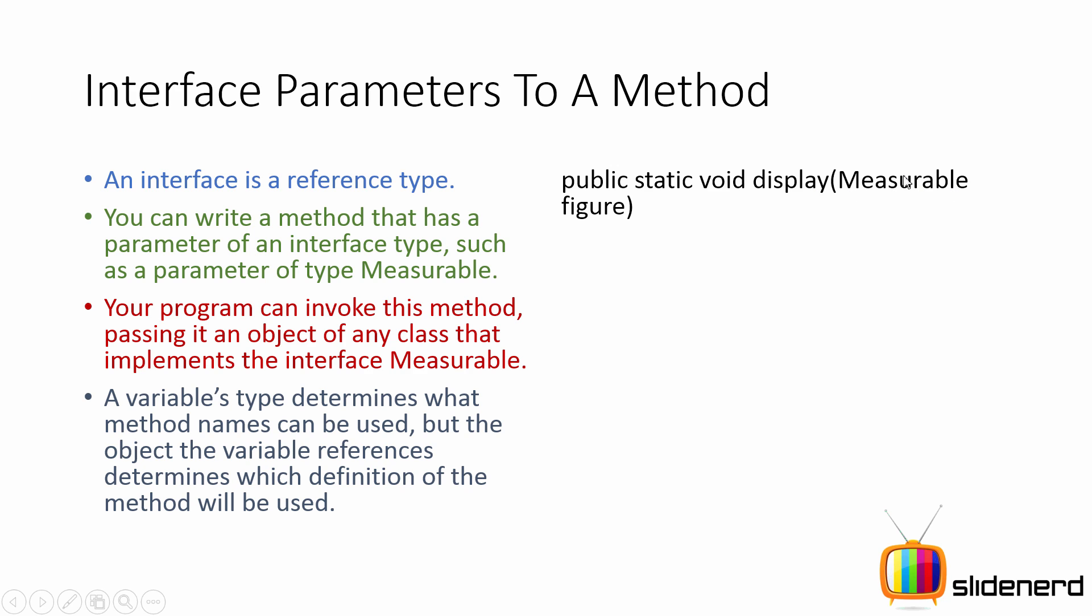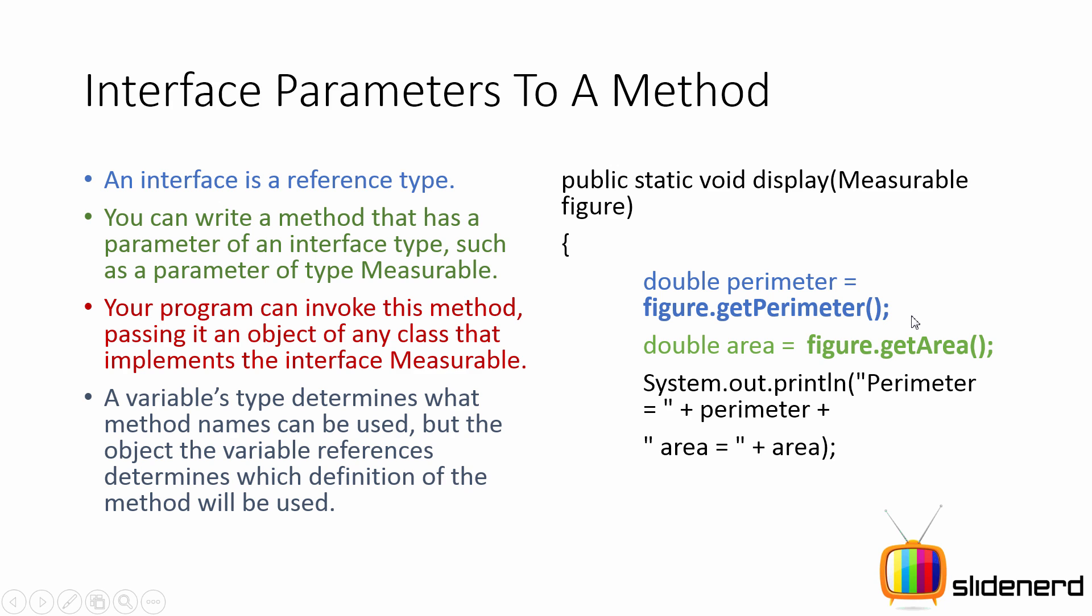Now measurable here is not a class, it's an interface. At this point, if you're a beginner like when I was back in the old days, you're definitely going to ask me the question: what the hell man, you said interfaces do not have objects, so how am I supposed to call this display method from our main method?